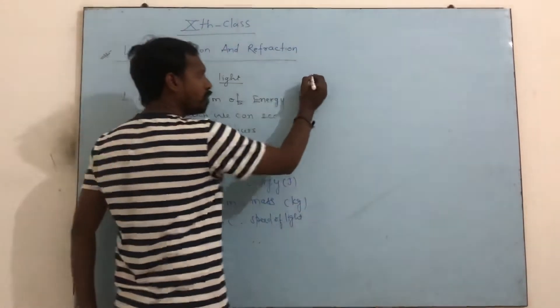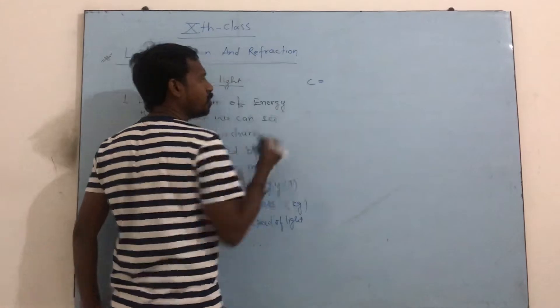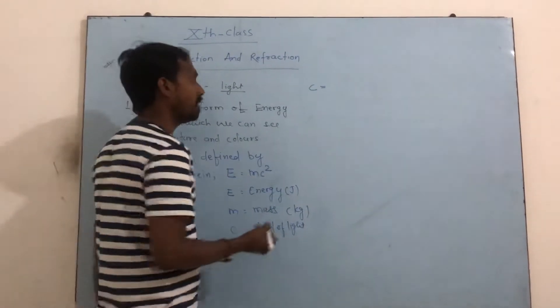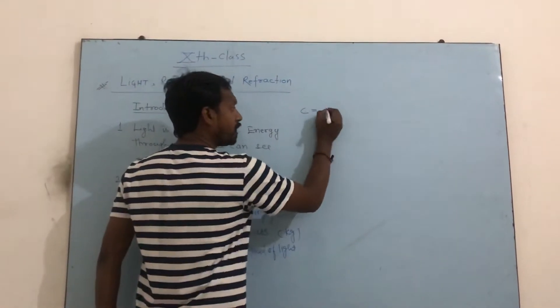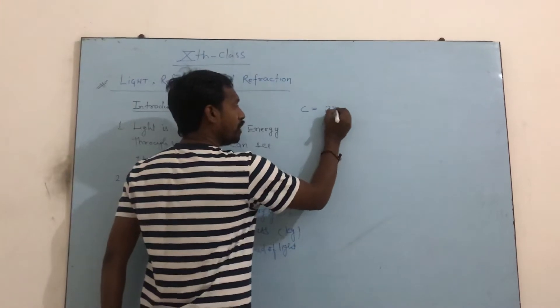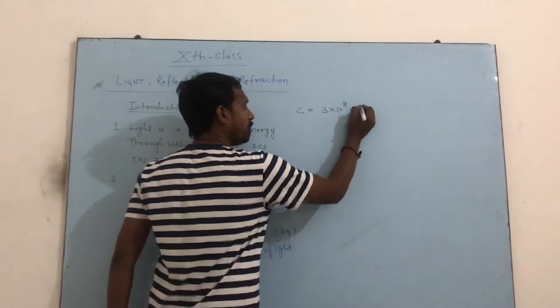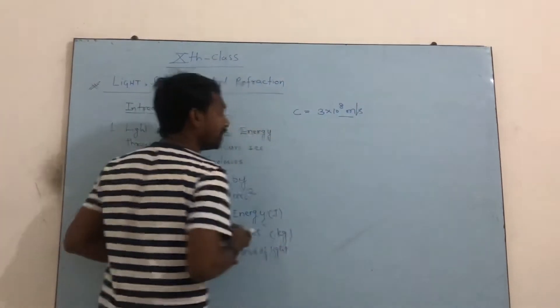A very important question in the class, even before 10th class: the Speed of Light is 3 times 10 to the power 8 meters per second. This is a very important point in the class.